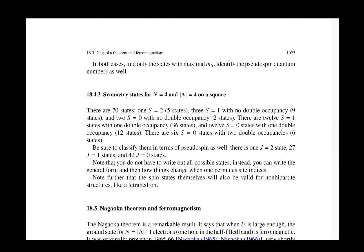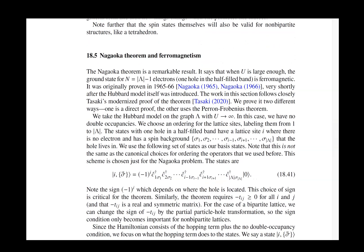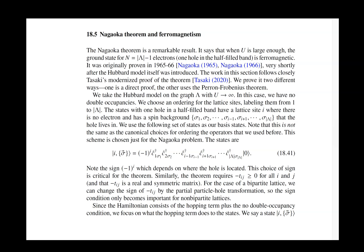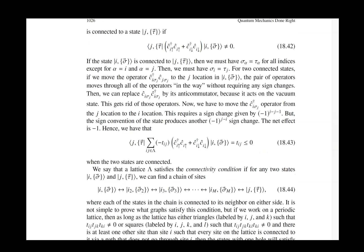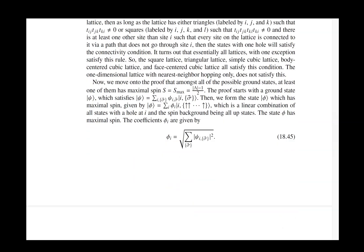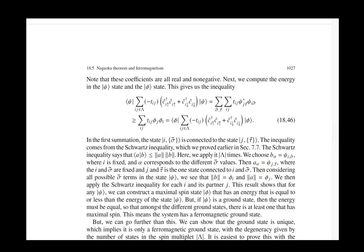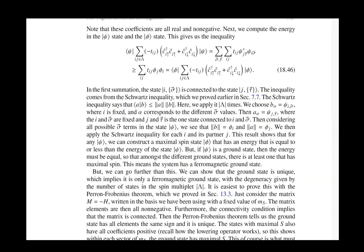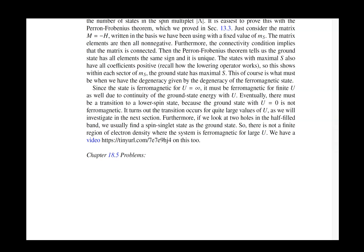Next up is the Nagaoka theorem. The Nagaoka theorem tells us about ferromagnetism, and it's a beautiful proof. The idea is you get the Hamiltonian matrix into a form where it is a positive or non-negative matrix, and then we can apply the Perron-Frobenius theorem, and then you look at the consequences of the Perron-Frobenius theorem.